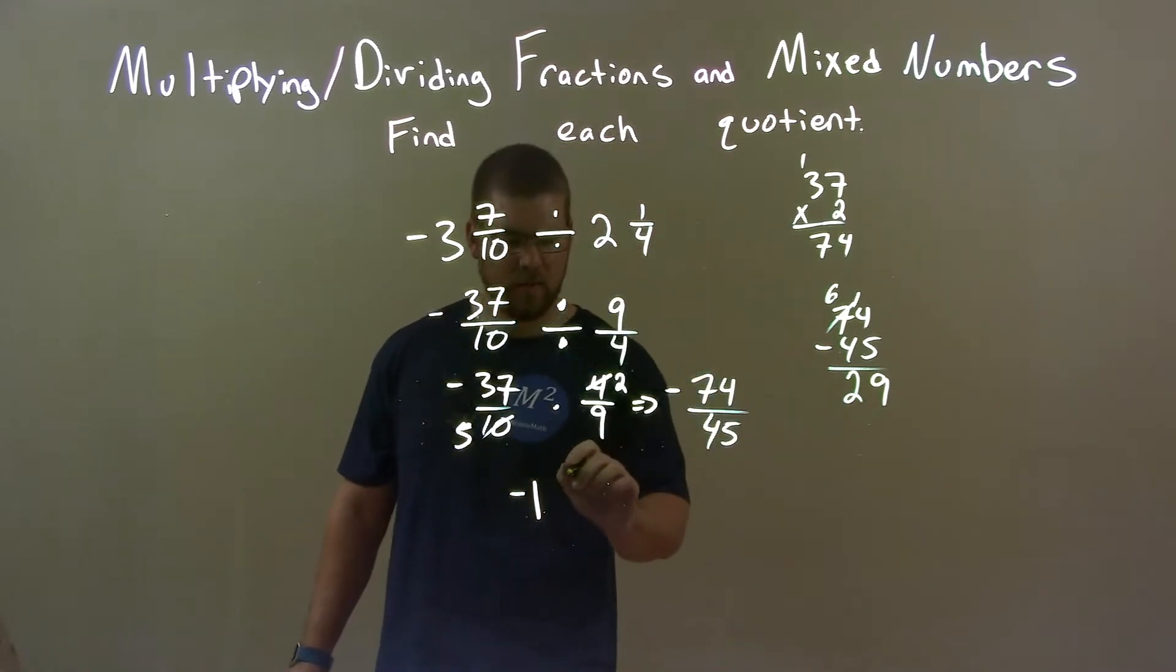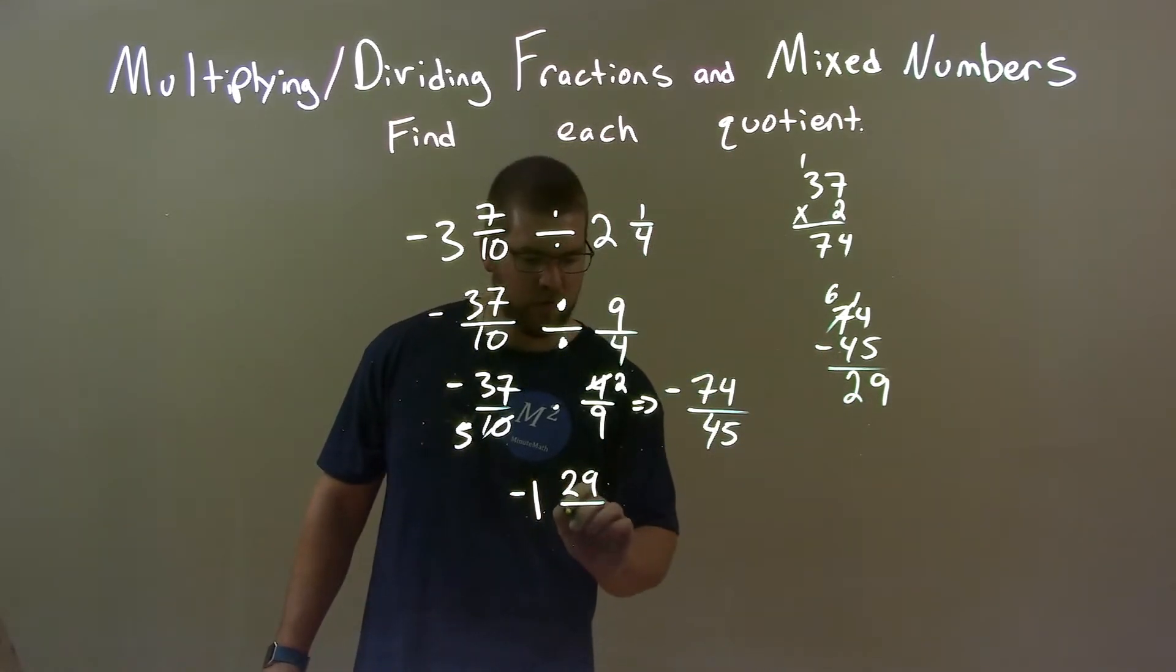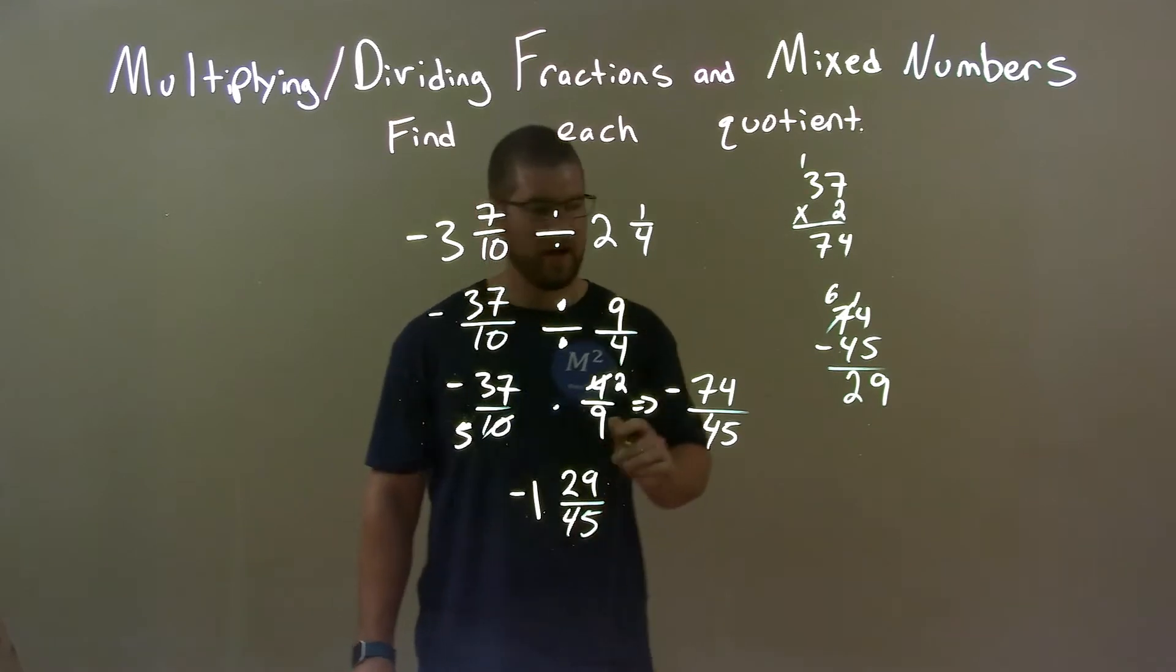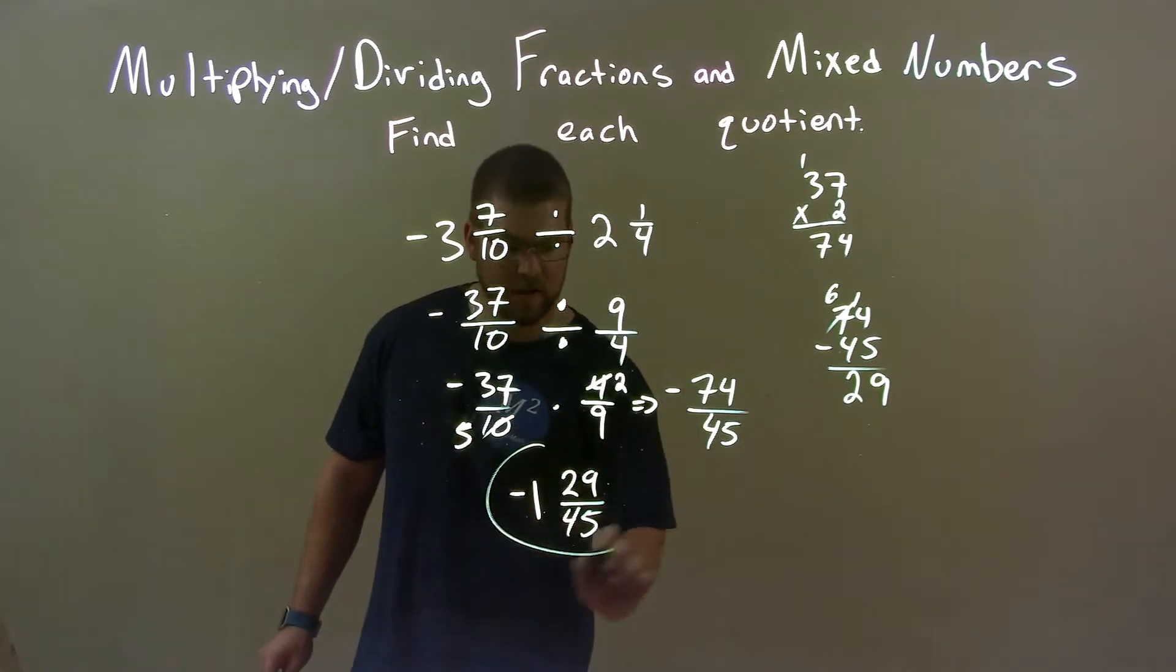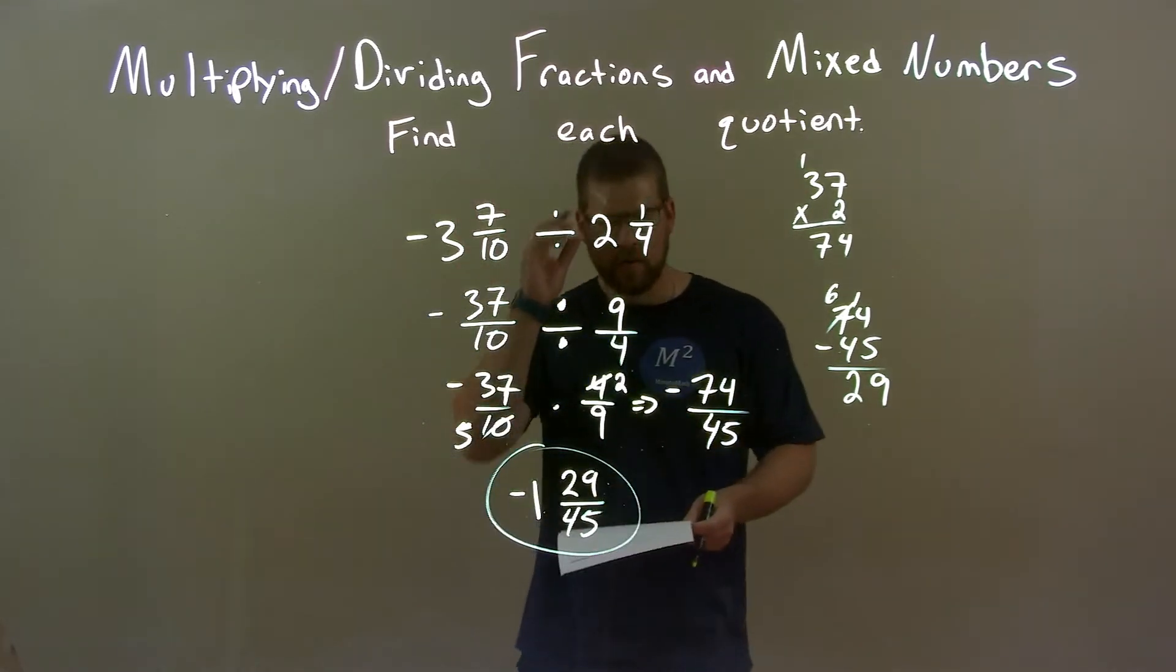14 minus 5 is 9. 6 minus 4 is 2. We got 29. So I got 29 here over 45. And there we have our final answer. Negative 1 and 29 over 45.